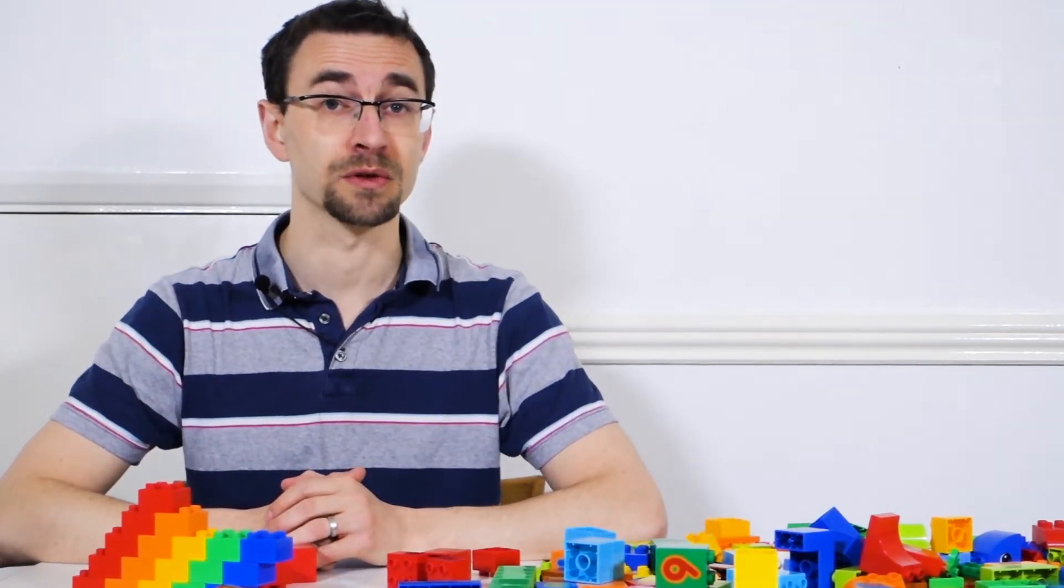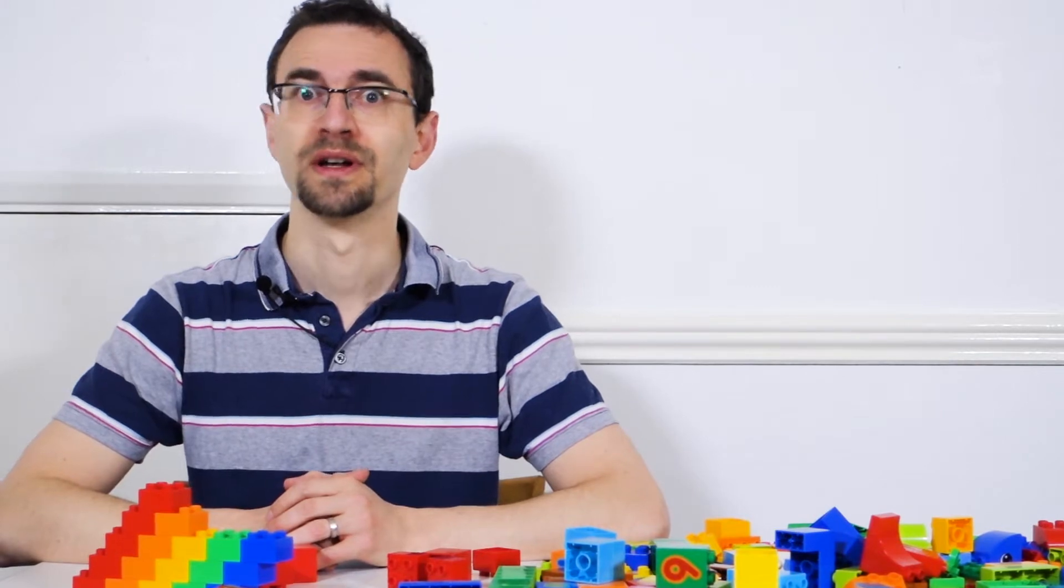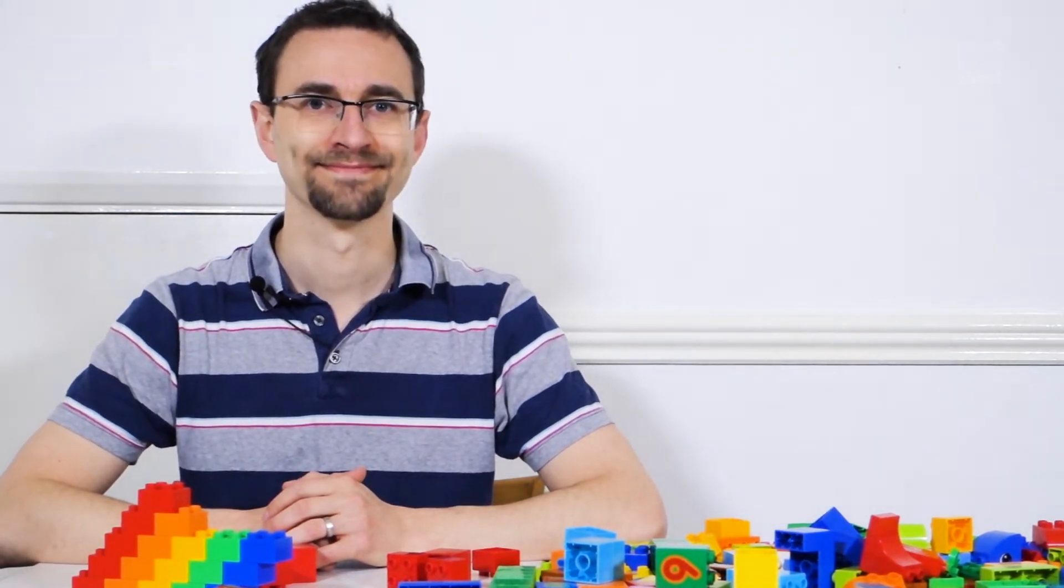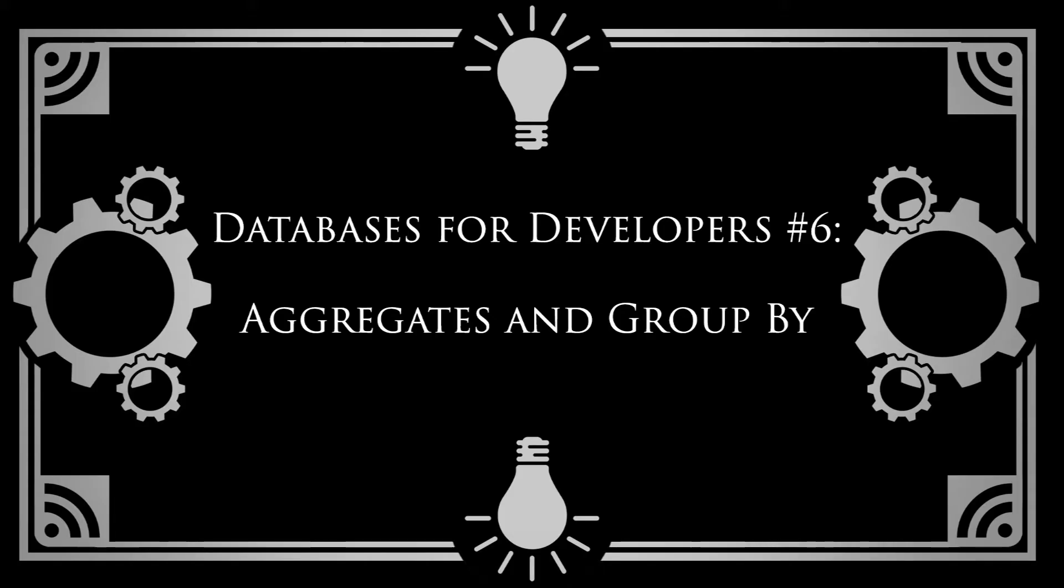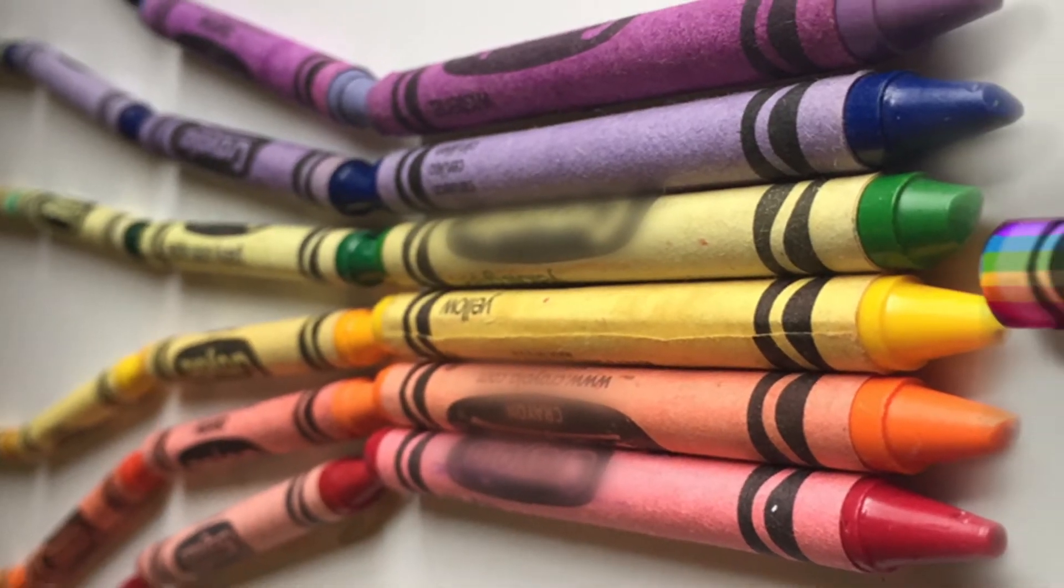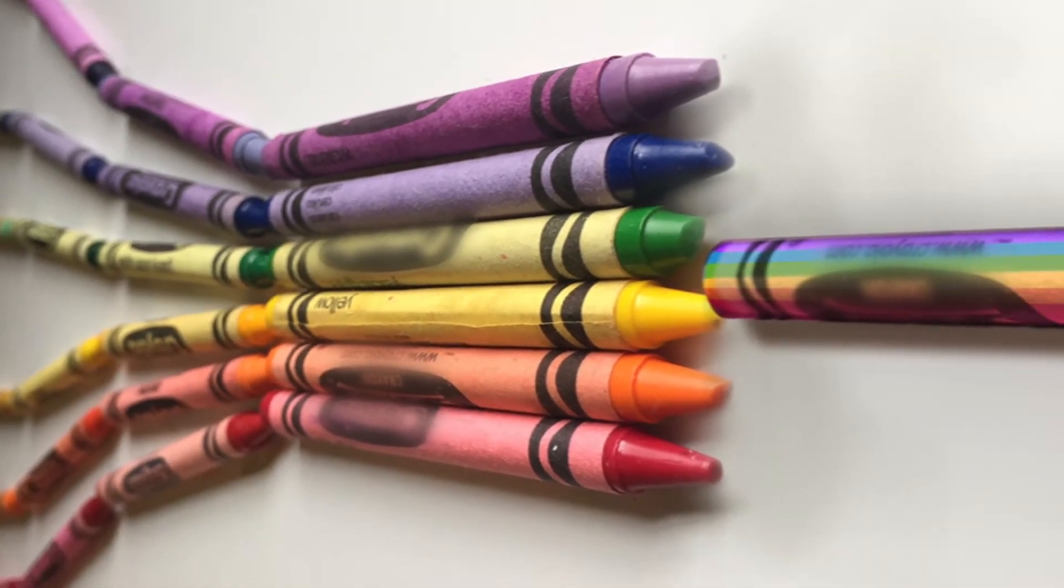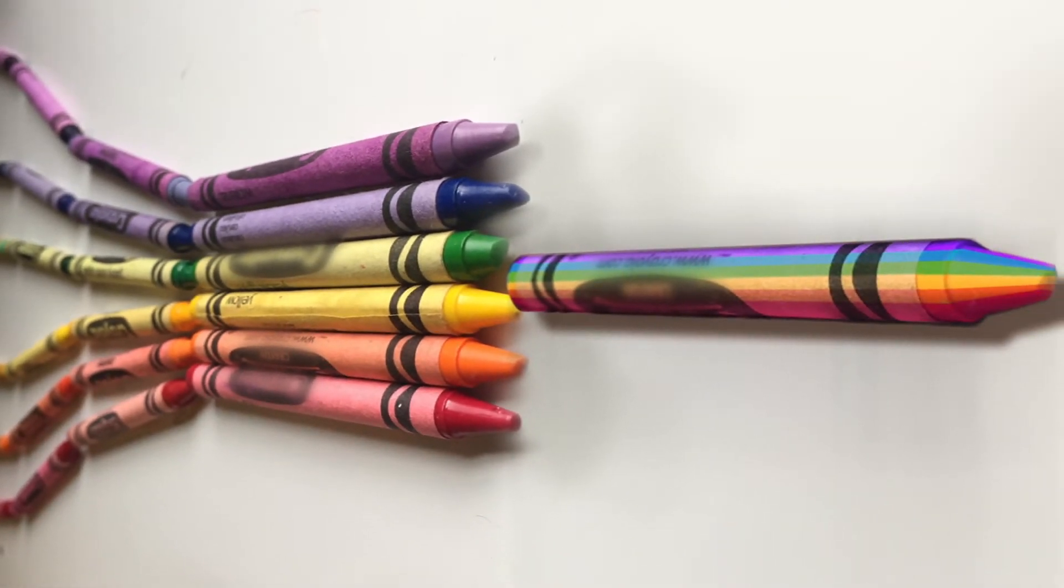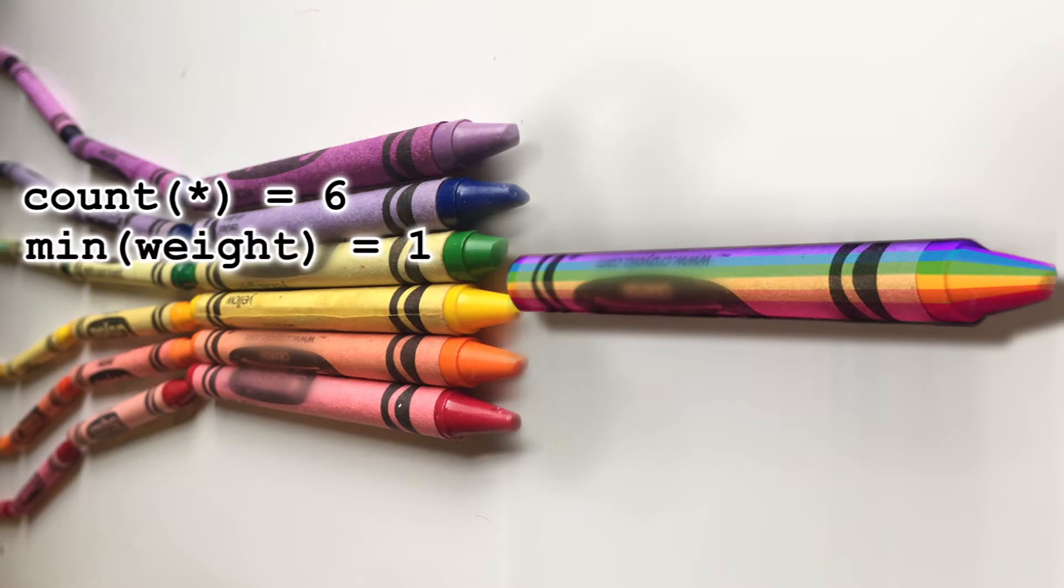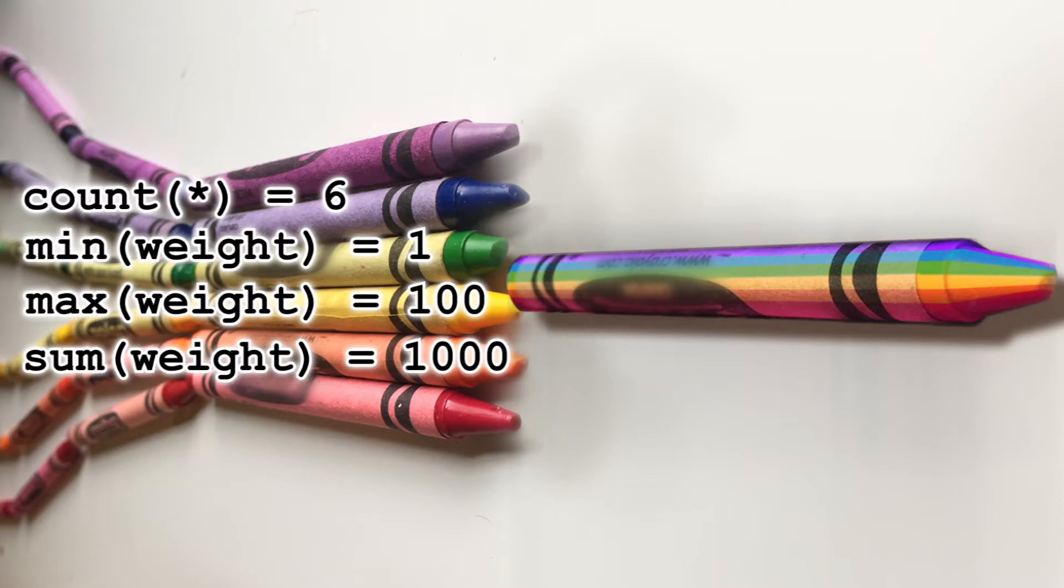Luckily SQL can do this all for you. Enter the world of aggregations. Aggregate functions combine values from many rows and output a single row. These enable you to do things like count how many rows you have, find the smallest and biggest values in a column or the total sum of all the values.